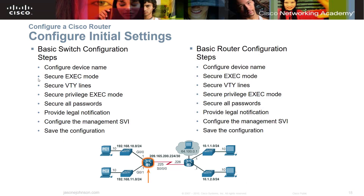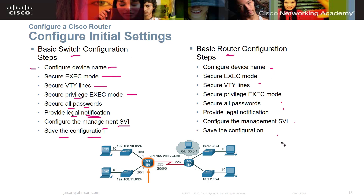When configuring a Cisco router, there are basic configuration steps to follow — I recommend keeping a notebook of basic commands as a checklist. You configure your device name, secure exec mode, secure your lines, secure privilege exec mode, secure all passwords, provide a legal notification banner, configure the management SVI, and save the configuration from running to your stored configuration file. These steps are pretty much the same from switch to router.